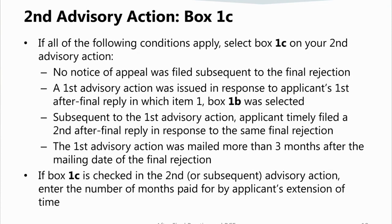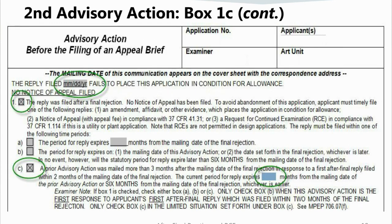Box 1C should be selected only when all of the following conditions apply: (1) applicant did not file a notice of appeal; (2) a first advisory action was issued in which box 1B was selected; (3) applicant timely filed a second after-final reply in response to the same final rejection; and (4) the first advisory action was mailed more than three months after the mailing date of the final rejection. If box 1C is selected, enter the number of months paid for by the extension of time.